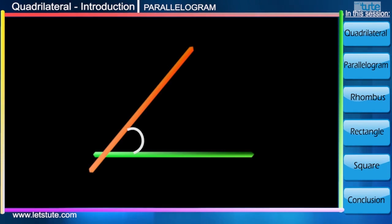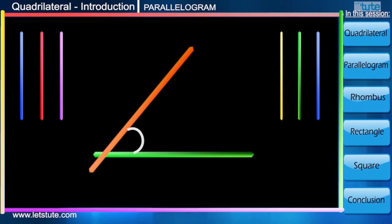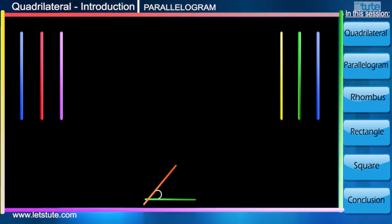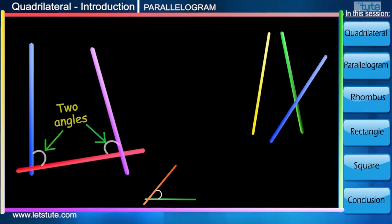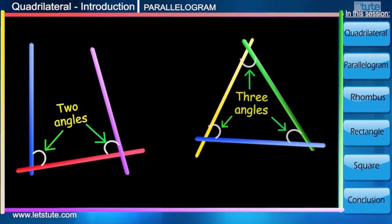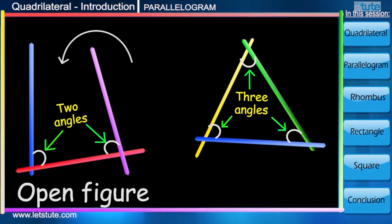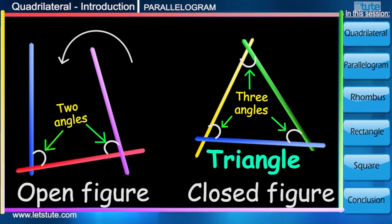So what do you think? If two sticks make one angle, then with three sticks how many possible number of angles can be formed? Well, they can either form two angles or even three angles. When only two angles can be made, it will be an open figure from one side. And when it forms three angles, it will be a closed figure, a triangle.